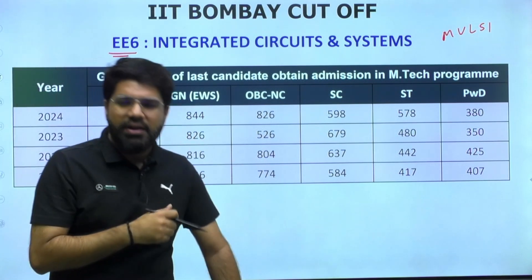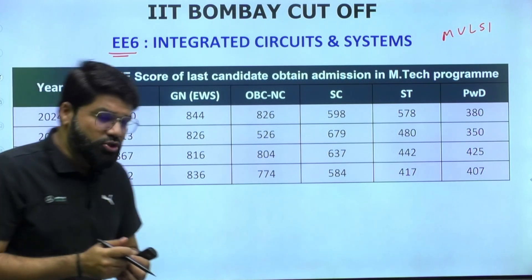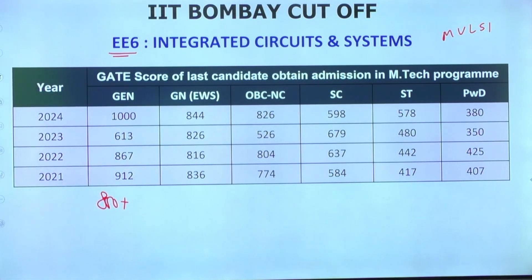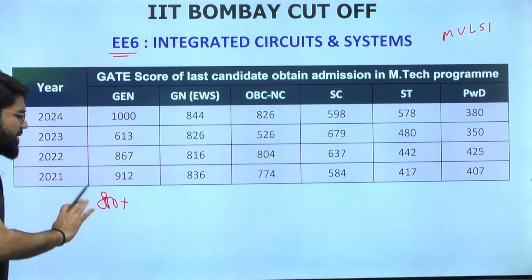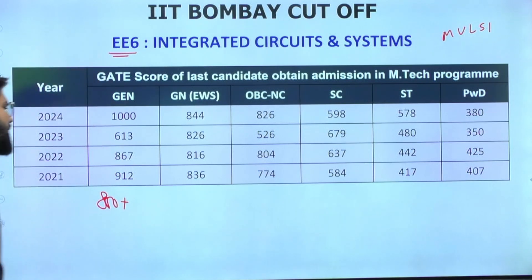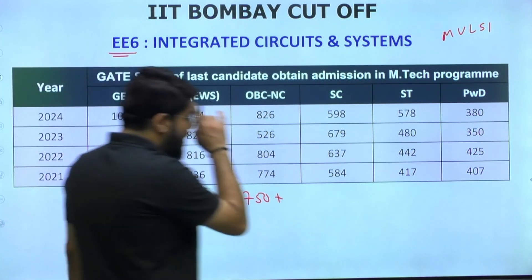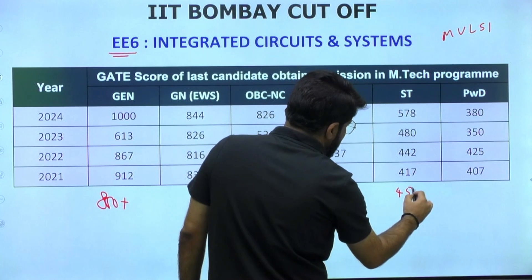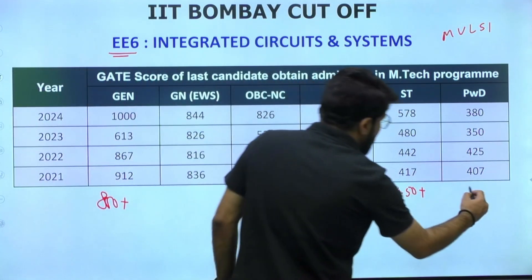The specializations I've listed follow a rough priority order for filling up the form. For general category, 800+ is worth applying — it often closes at 900+. For OBC Non-Creamy Layer, 750+ is a safe call. For SC, 550+ is recommended; for ST, 450+ is safe; and for PWD, 350+ could work for Integrated Circuits and Systems.